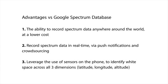Google has a product called the Spectrum Database, which will be our nearest competitor. Compared to their offering, advantages of our product include the ability to record spectrum data anywhere around the world at a lower cost, recording spectrum data in real time using live push notifications and crowdsourcing, and leveraging the use of an altitude sensor on phones, allowing us to identify white space across all three dimensions.